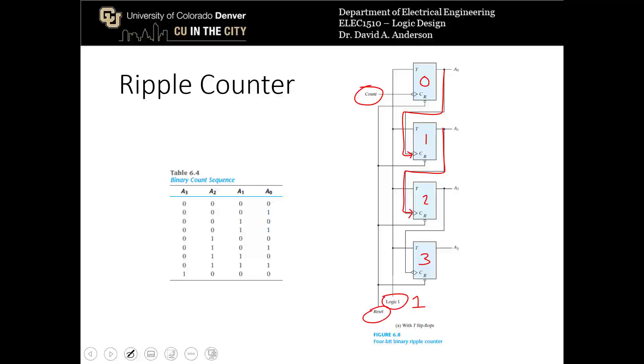There's also a reset line here that will just reset the count, reset all of the outputs to 0, so that can be used as well. We don't normally use those in designs, but it does make the implementation of the ripple counter a little more flexible in how it behaves.